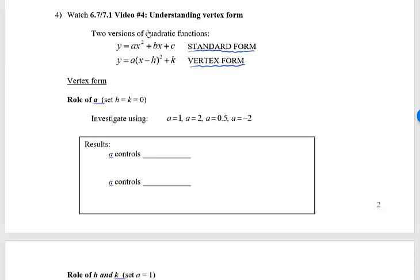You'll notice that each form has a bunch of constants. A is the same constant in both forms, so that number appears identical in both, but standard form has b and c, whereas vertex form has h and k.